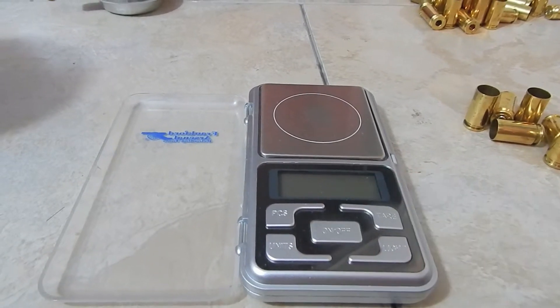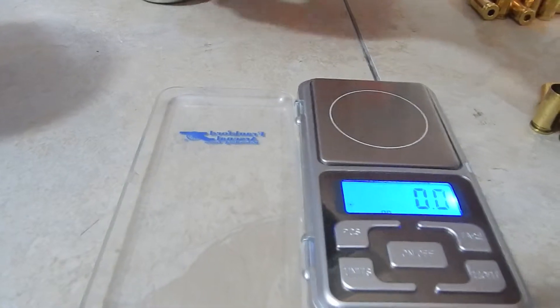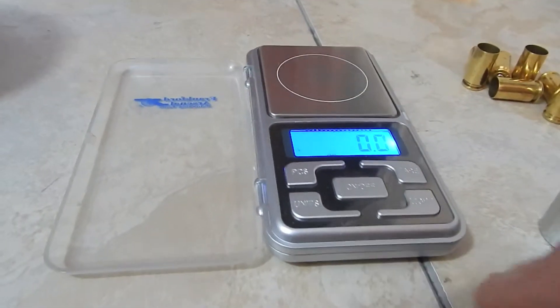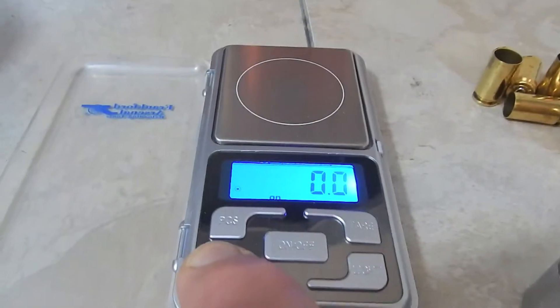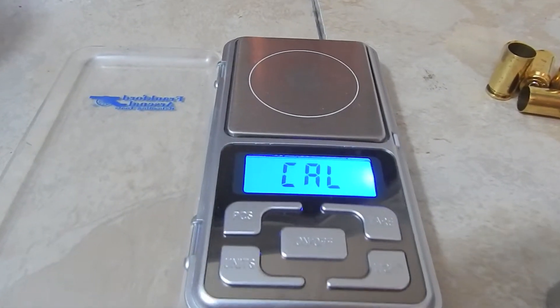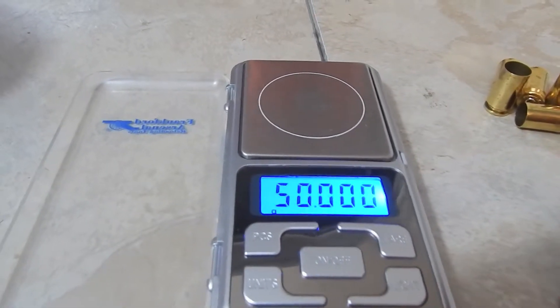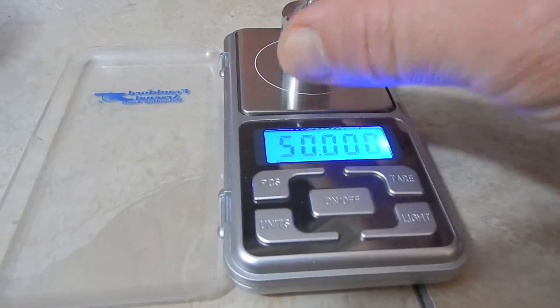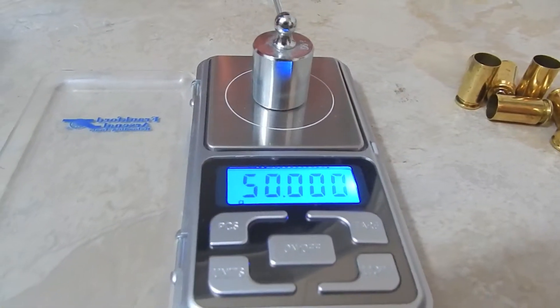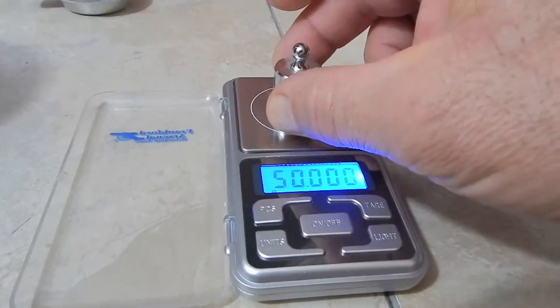First thing I do, power it up and calibrate it, grab the calibration weight. Need to hold the units button down and it'll go into calibration mode, hit it again and it tells you the weight to put on it which is what this is. We'll set that on there, wait a few seconds, pass. Scale is now calibrated.